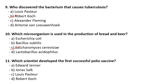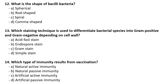Which scientist developed the first successful polio vaccine? That is Jonas Salk. What is the shape of bacilli bacteria? Bacilli bacteria are rod-shaped. Many times we simply use the term 'bacilli' — they are generally rod-shaped bacteria.